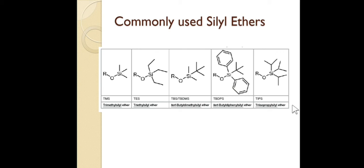There are many silyl protecting groups developed, but these five are very commonly used: the first is TMS, abbreviated for trimethylsilyl ether; the second is TES, triethylsilyl.